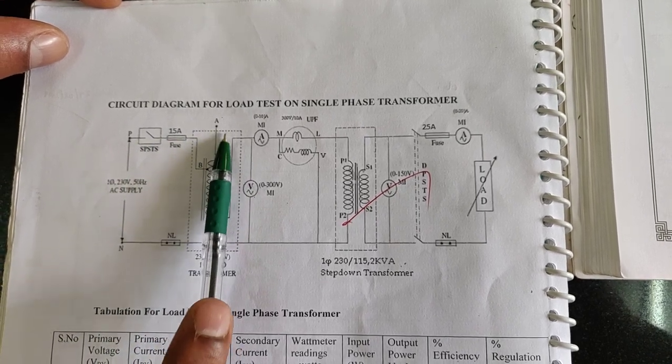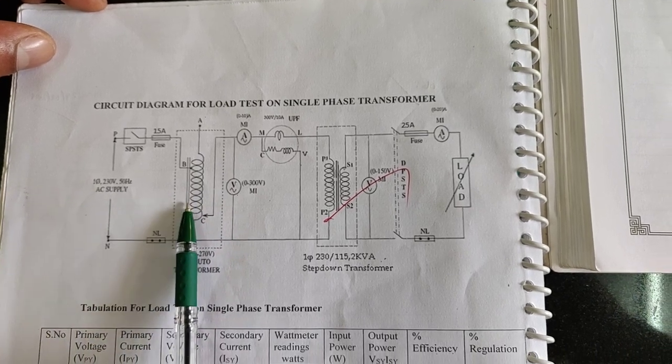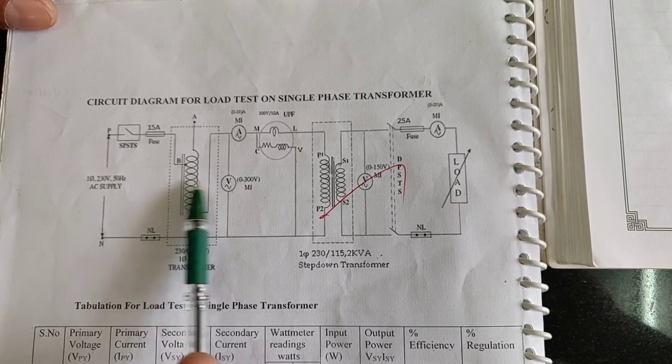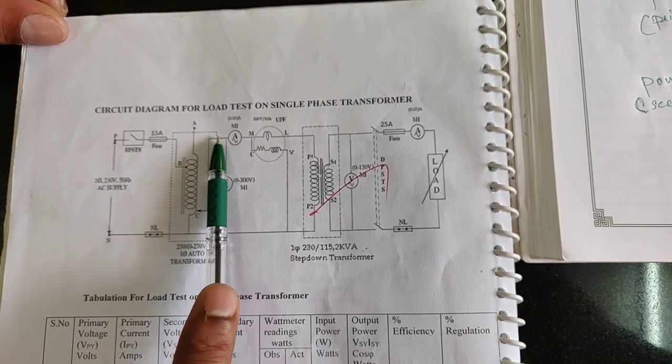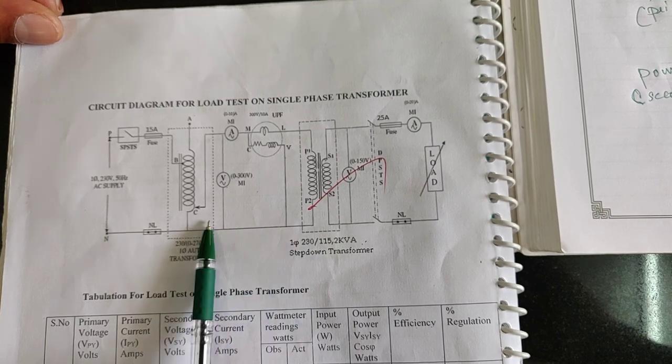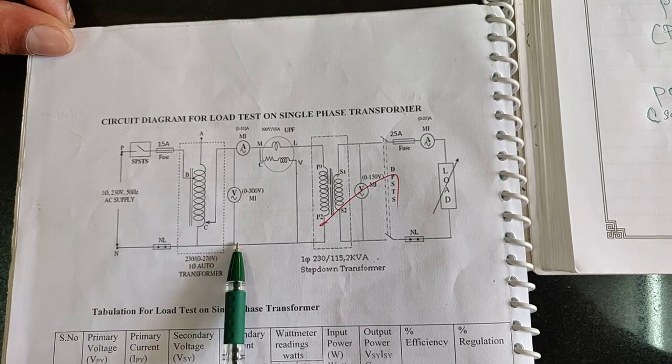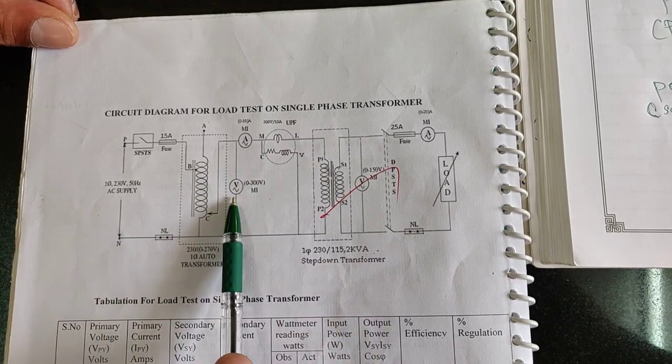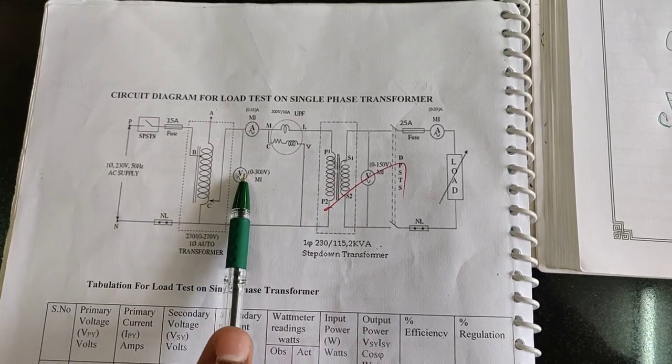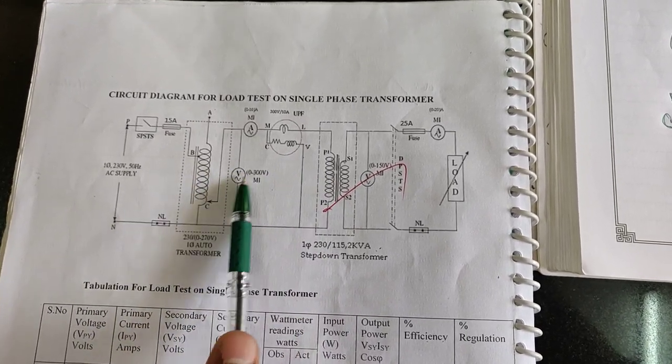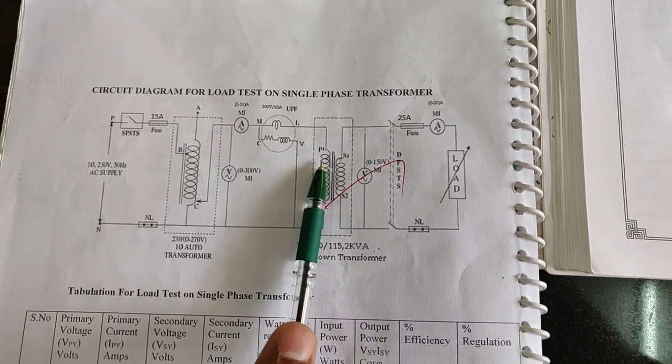The same supply is given to the transformer which is called auto transformer or we will call it as single phase varia which will give the variable voltage. The output of this transformer is the variable voltage is given to the transformer primary side via an ammeter and a wattmeter and also a voltmeter is connected across the primary coil to measure the primary voltage otherwise the high voltage and this ammeter is used to measure the primary current consumed by the transformer.